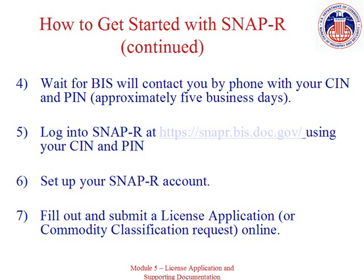In approximately five business days, BIS will call you with your company identification number and personal identification number. With this information, you can then log into the SNAP-R system, set up your account, and submit your license application.